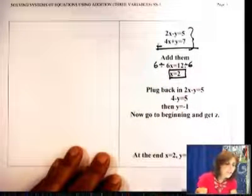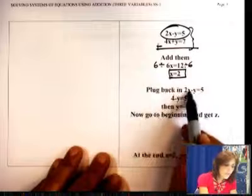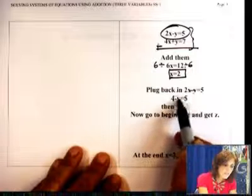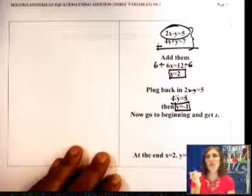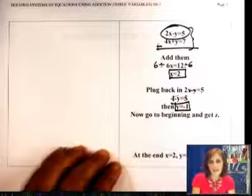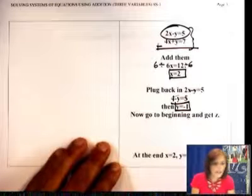Now you are going to back substitute. Remember one of the equations were 2X minus Y equals 5. So instead of X, I'm going to put 2. So that's going to give me 4 minus Y equals 5. And then you move things around and you'll get Y equals negative 1. So what did I do? Solve for 1 and back substitute. Get the second one.